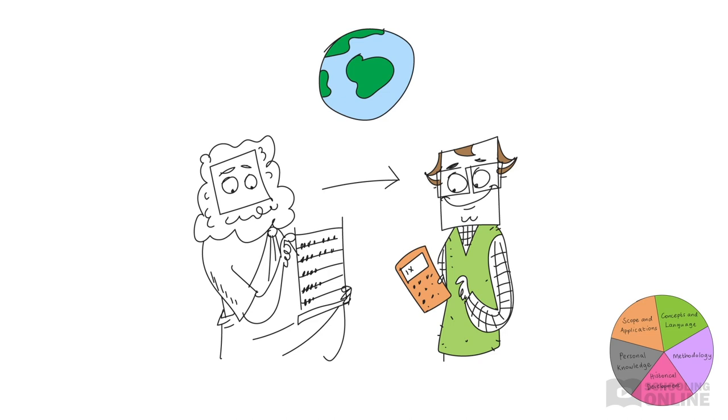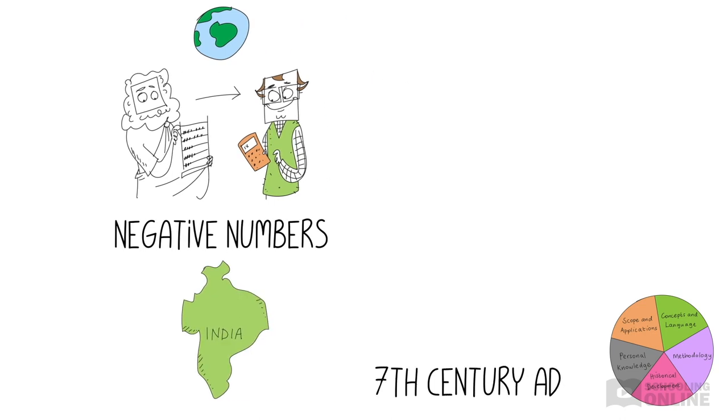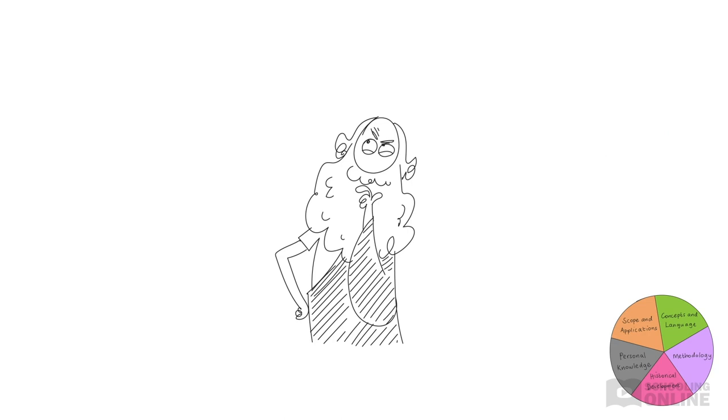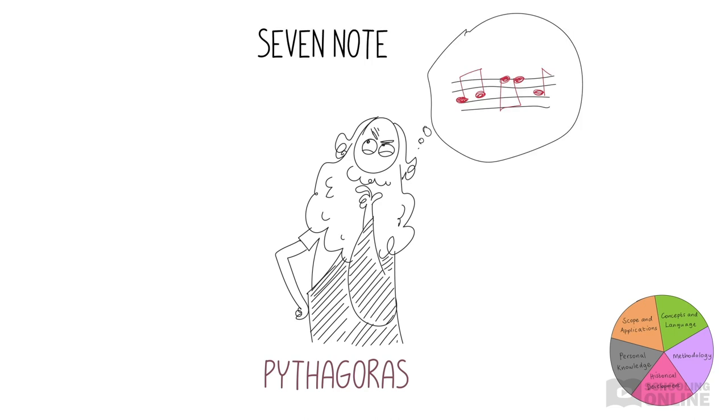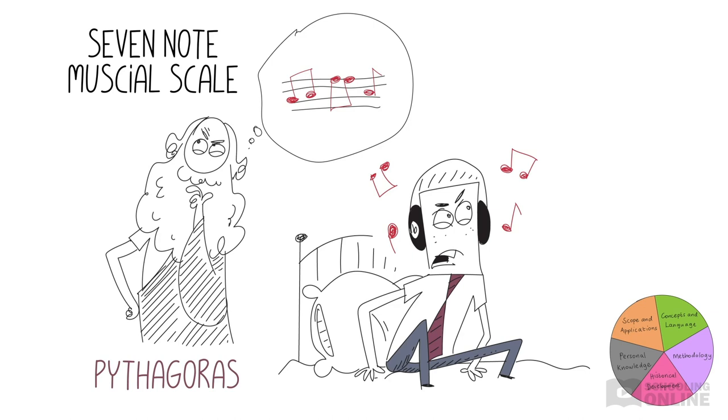All right, let's explore the historical development of mathematics. Mathematical developments often shift how we view the world. For example, negative numbers didn't appear in India until the 7th century AD. This provided moneylenders with a new way to record debts. And what about the early work of Greek mathematicians like Pythagoras who helped develop the seven-note musical scale? What would music sound like today without this musical scale? Consider how this might have affected another area of knowledge, the arts.